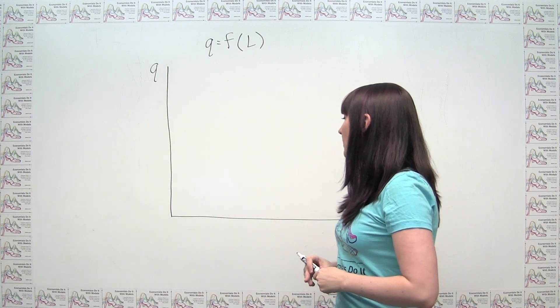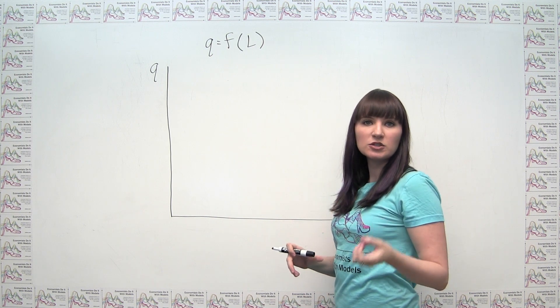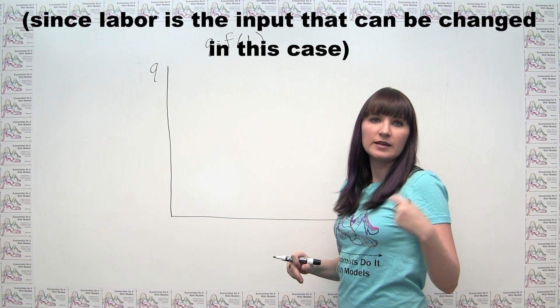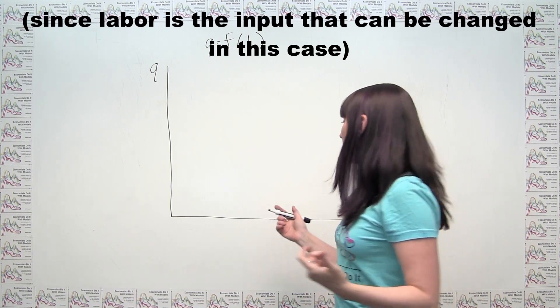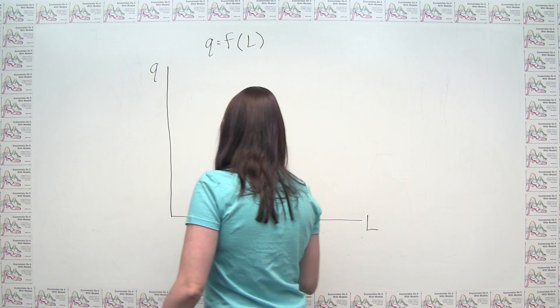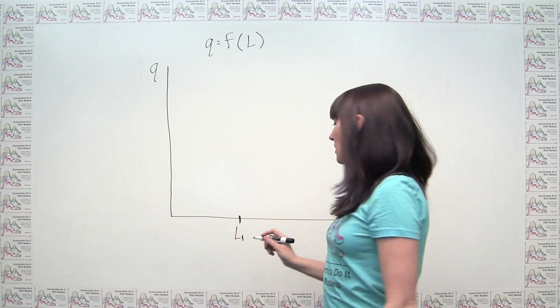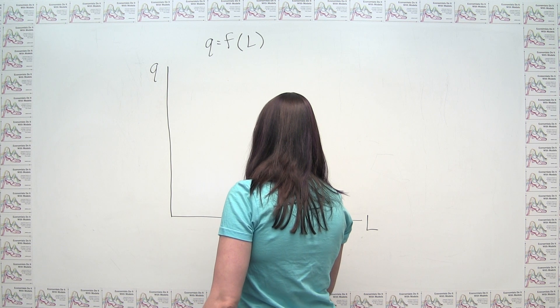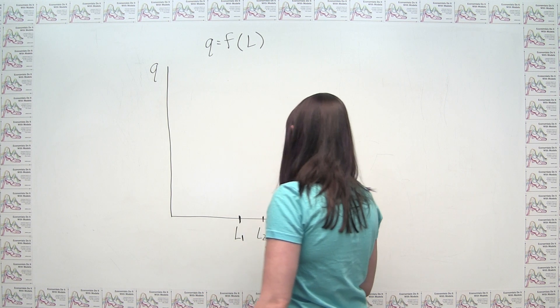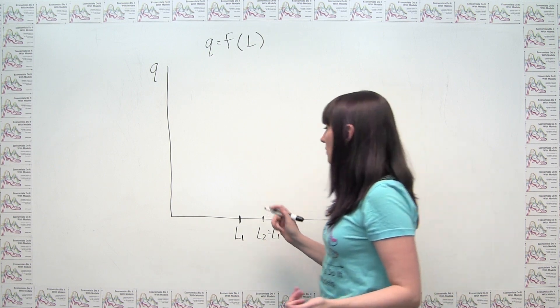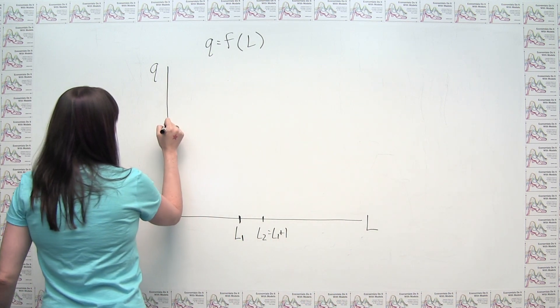We want to think about a case where adding an additional unit of labor is not actually adding any quantity of output. So that would look something like this here, where you would have, I'll just call it L1, and then call this L2, and L2 is just going to be L1 plus 1. So we've just added one more unit of labor.